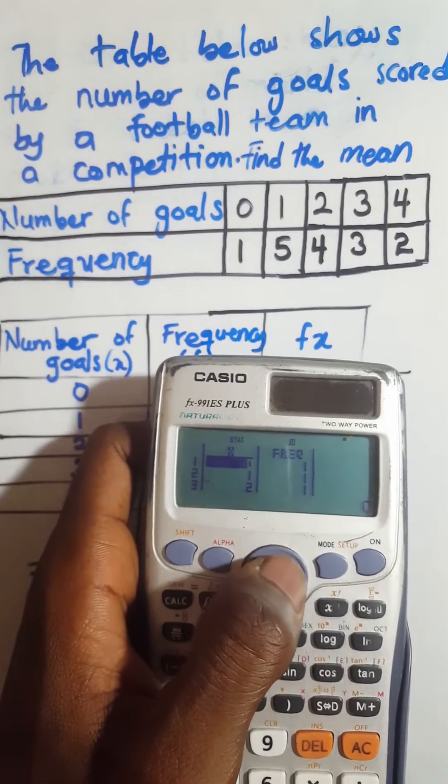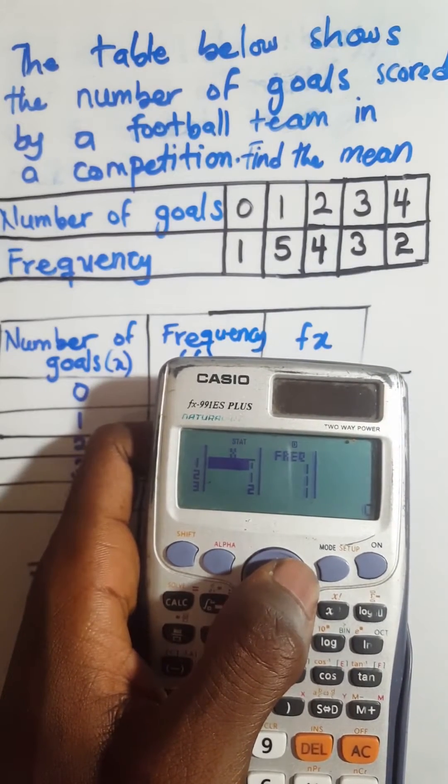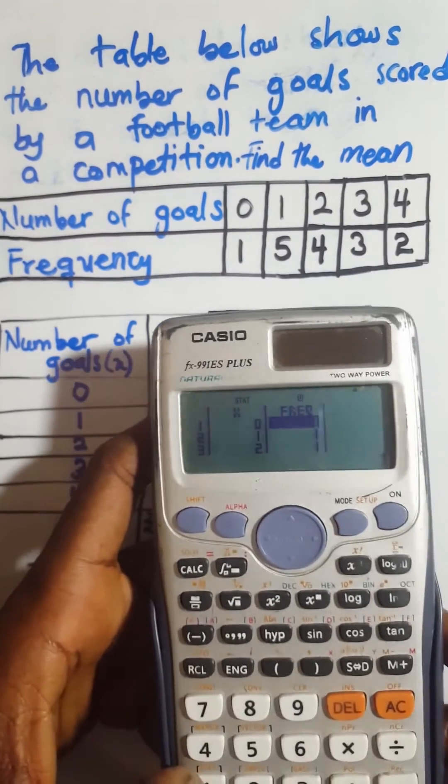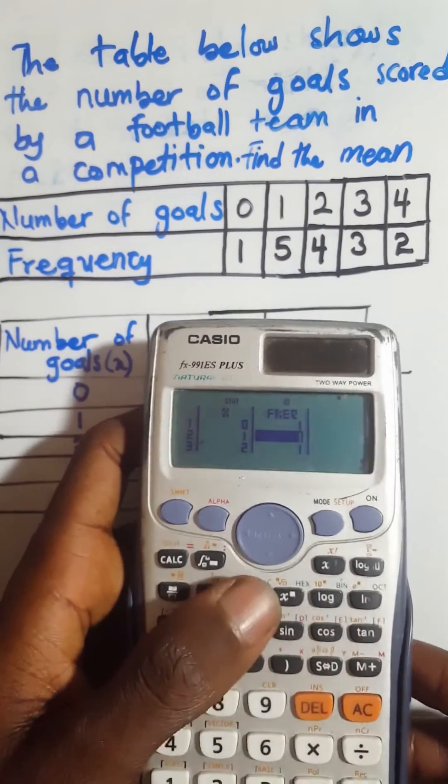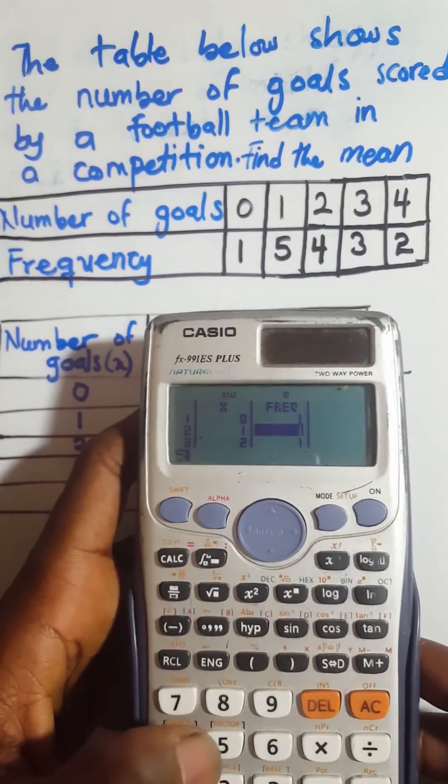Now by default the calculator is telling you that everything has frequency of 1, but you have to change it. So we are going to change the frequency. The frequency of the zero is 1, so you press 1 then you press equal to.